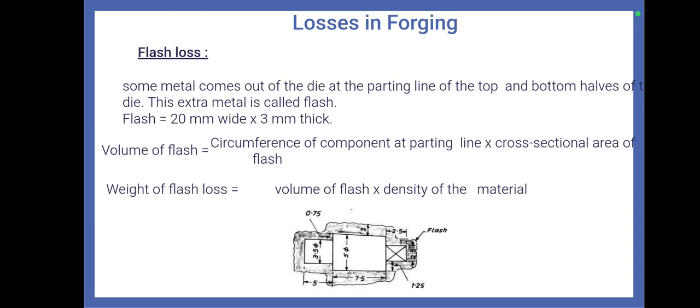Flash loss is generally taken as 20mm wide and 3mm thick. For finding the flash loss, multiply the volume and density of the material, where volume of flash is circumference of the component at parting line multiplied by the cross sectional area of the flash.